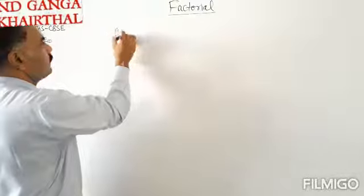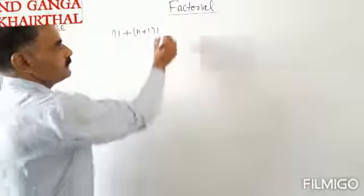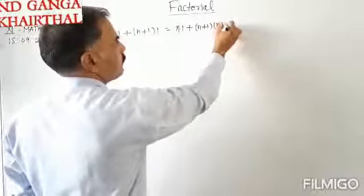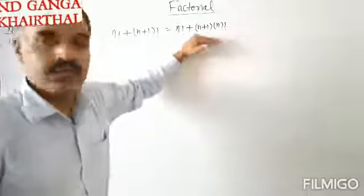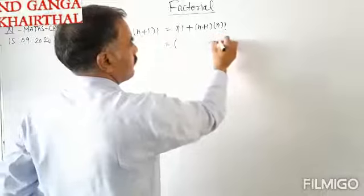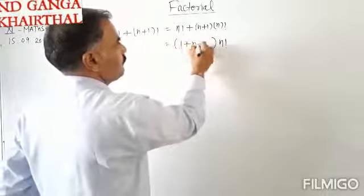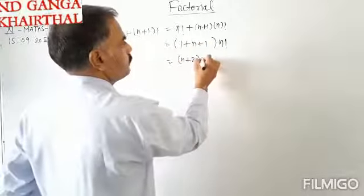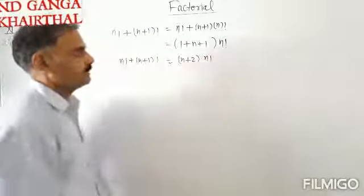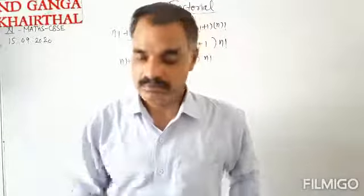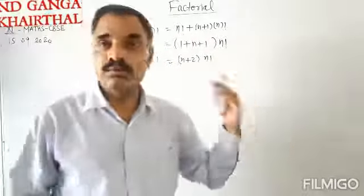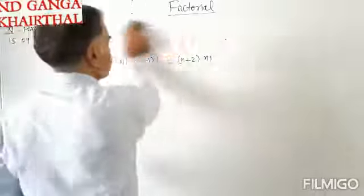Now, finding the value of n factorial plus n plus 1 factorial. That equals n factorial plus n plus 1 factorial. Now n plus 1 factorial can be written as n plus 1 into n factorial. So taking n factorial common, this is n factorial into 1 plus n plus 1, which equals n factorial into n plus 2. So n factorial plus n plus 1 factorial equals n plus 2 into n factorial.